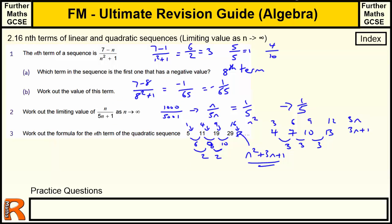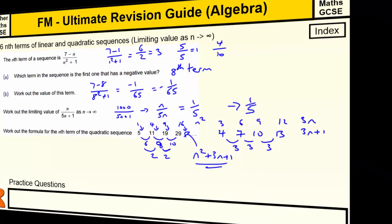Okay, so that's linear and quadratic sequences. That's the conclusion of the algebra section. It's the biggest section in the revision guide. So if you've made it to the end of it you've done very well.